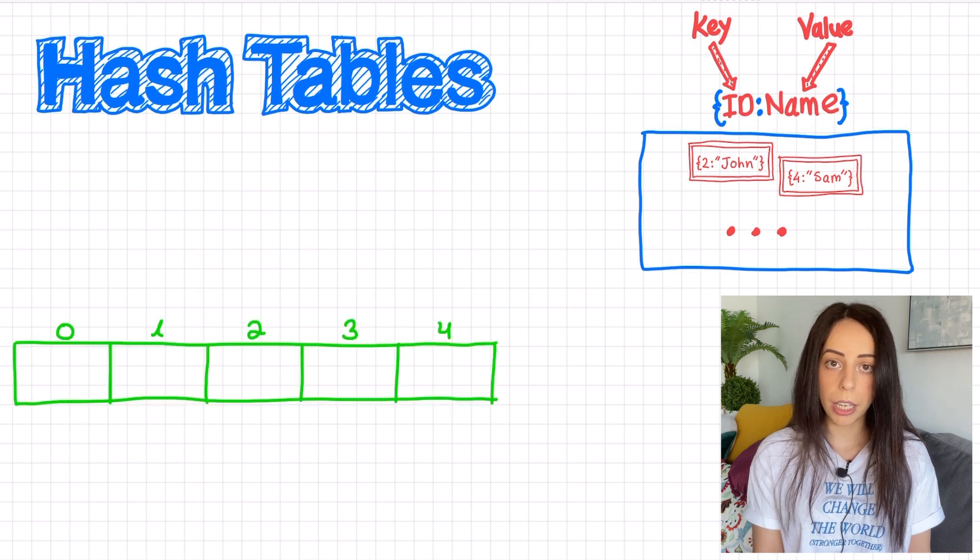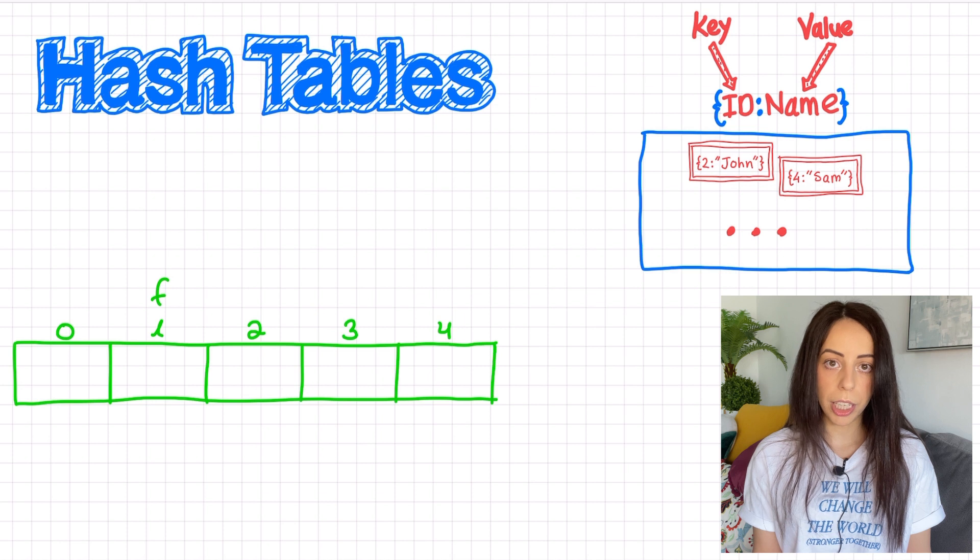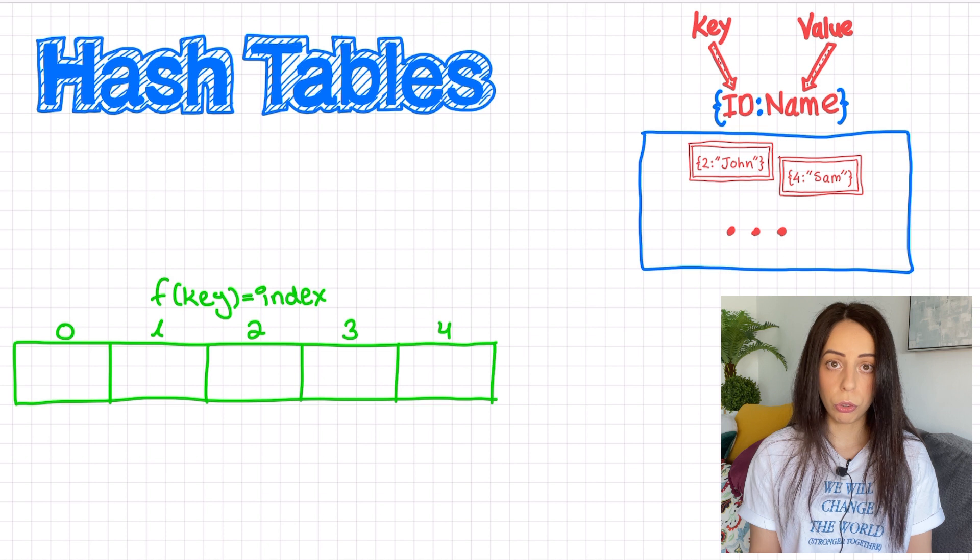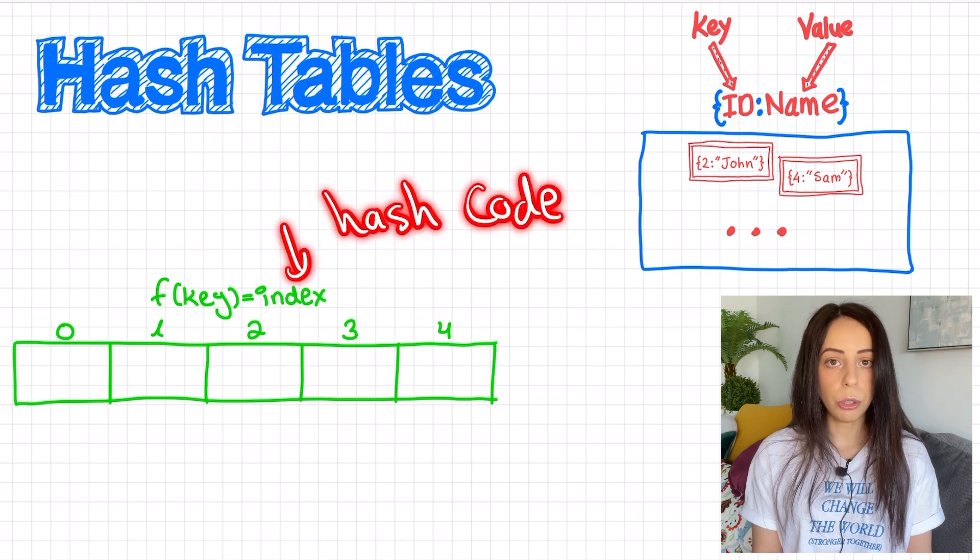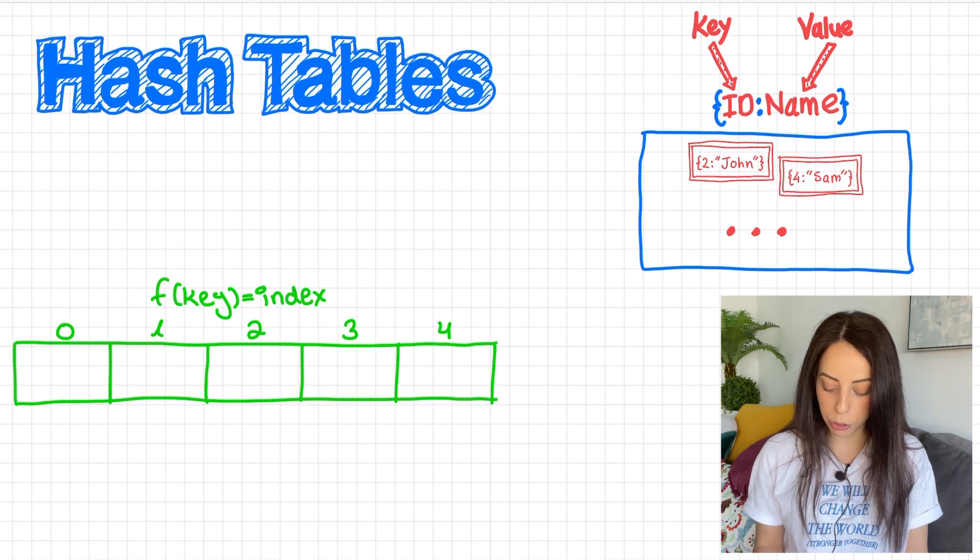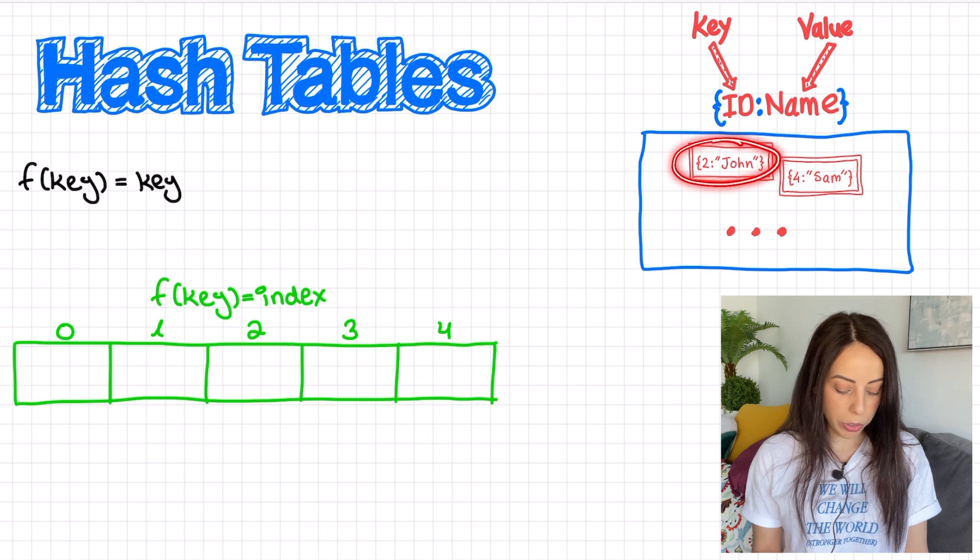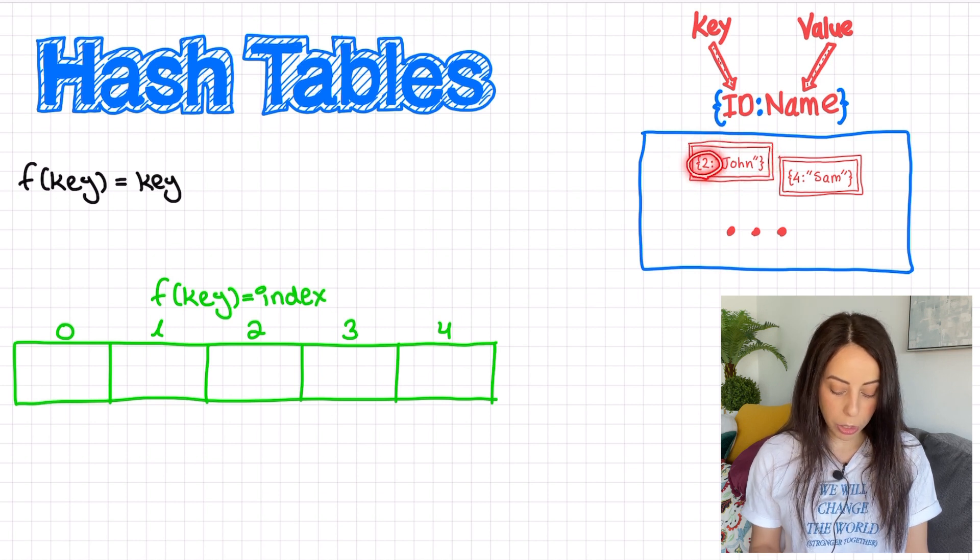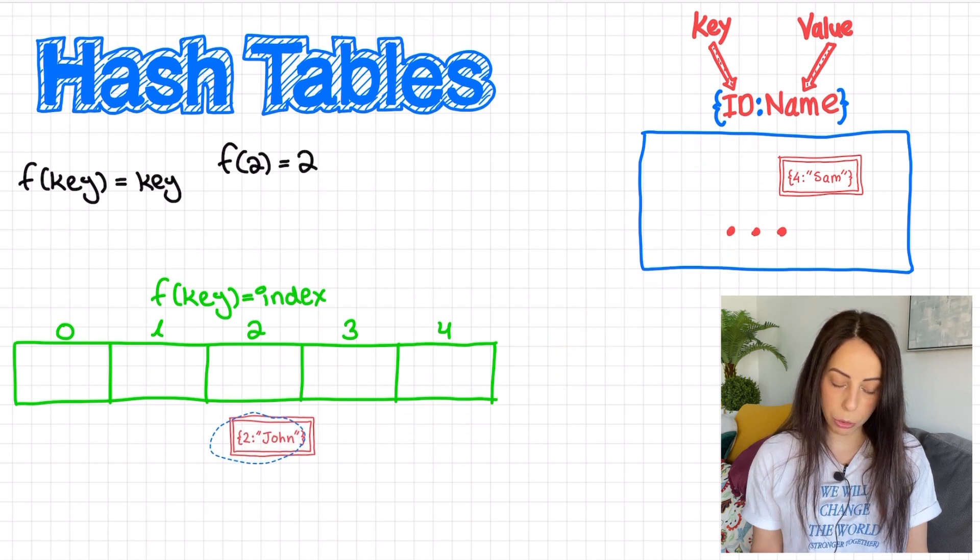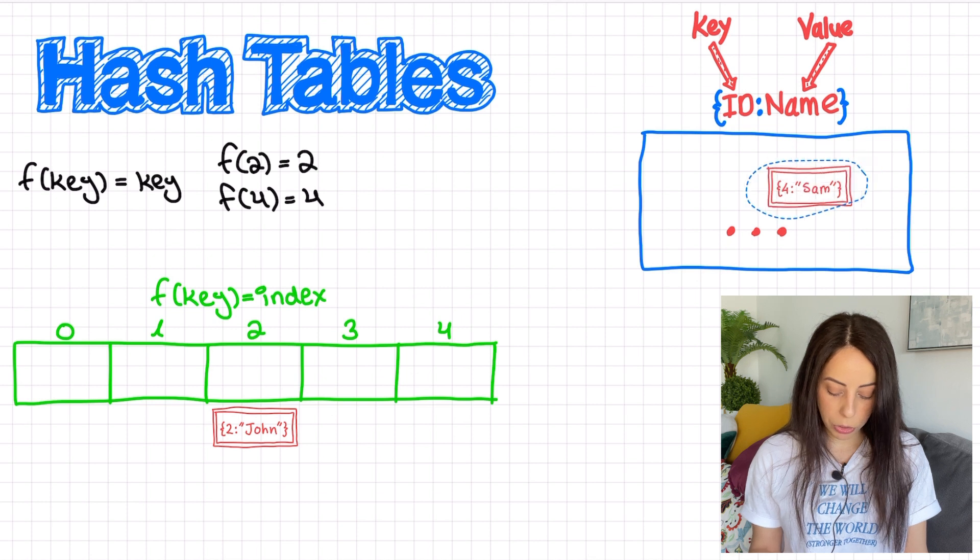So how does it work? Under the hood, we have an array and a function called a hash function. When we insert a key value pair to the table, the key is pushed into the hash function. This function will output an index, also known as a hash code, and the value is stored in that index. So for example, in this case, we can choose the hash function to be the identity function. f of key equals key. And then when we go to insert this element, the key 2 is pushed into the hash function, which returns the value 2, so this element will be stored in index 2. The hash code for key 4 will be 4, so this element will be stored in index 4.